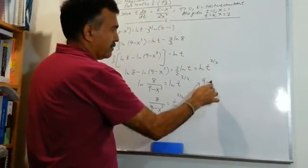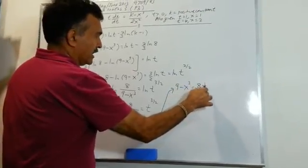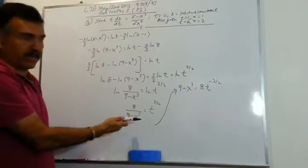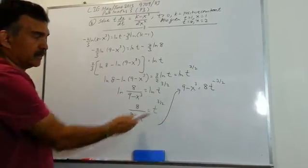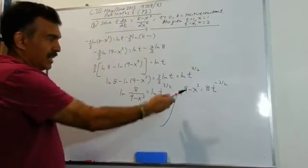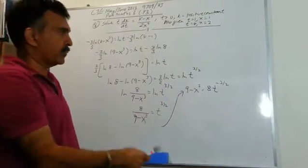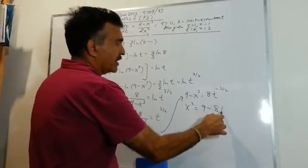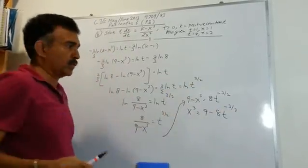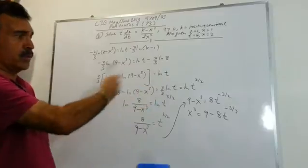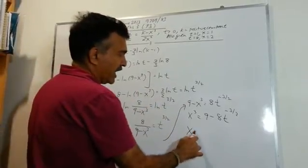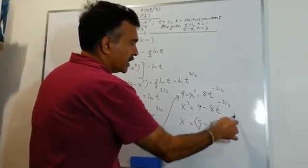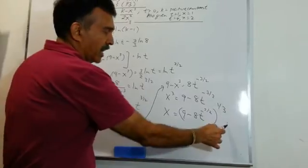So we have ln[8/(9 - x³)] = ln(t^(3/2)). Dropping the logs: 8/(9 - x³) = t^(3/2). Rearranging: 9 - x³ = 8·t^(-3/2). Therefore x³ = 9 - 8t^(-3/2), and so x = (9 - 8t^(-3/2))^(1/3), and we are done.